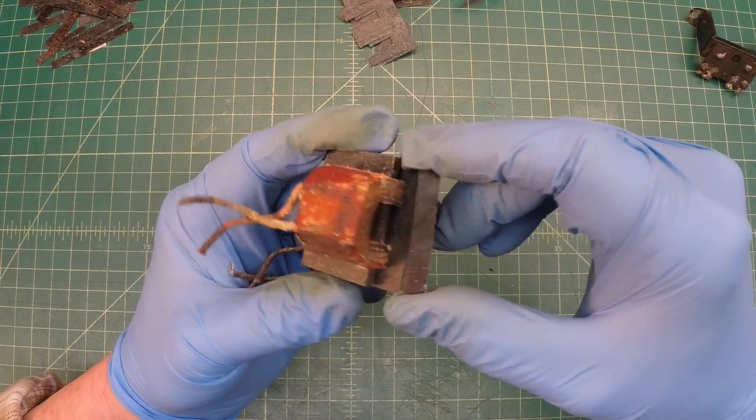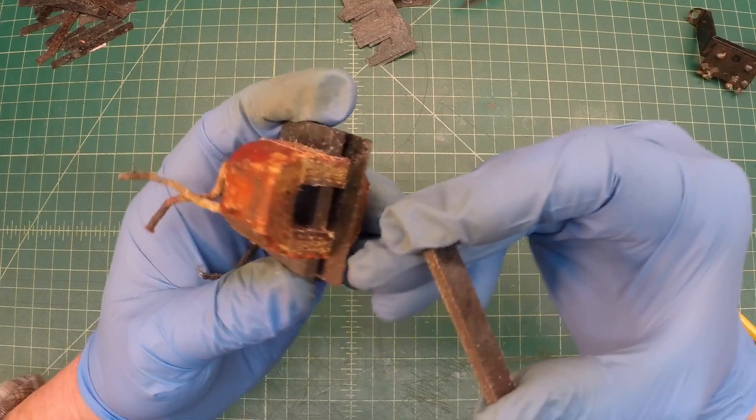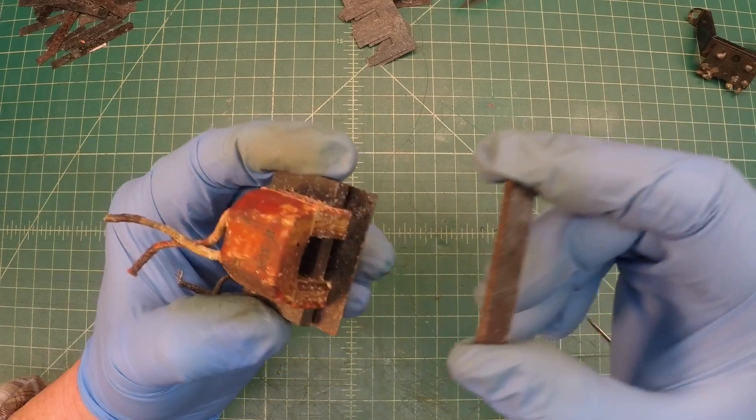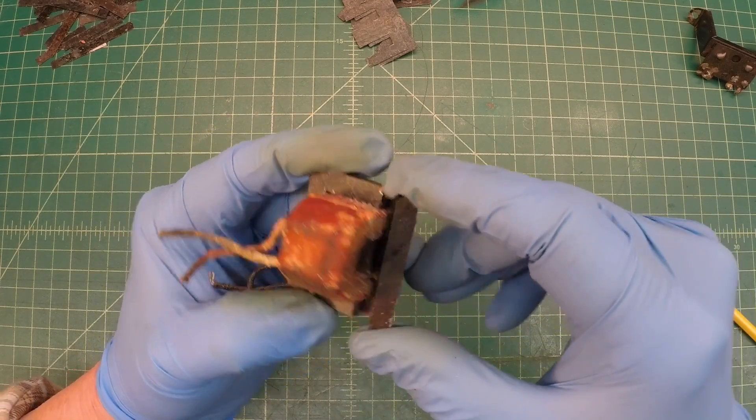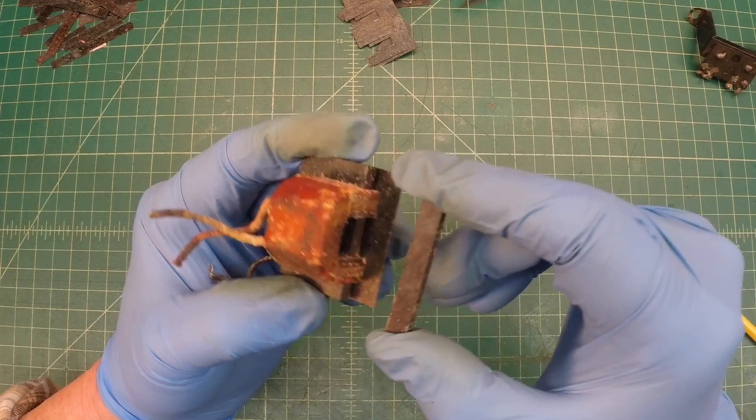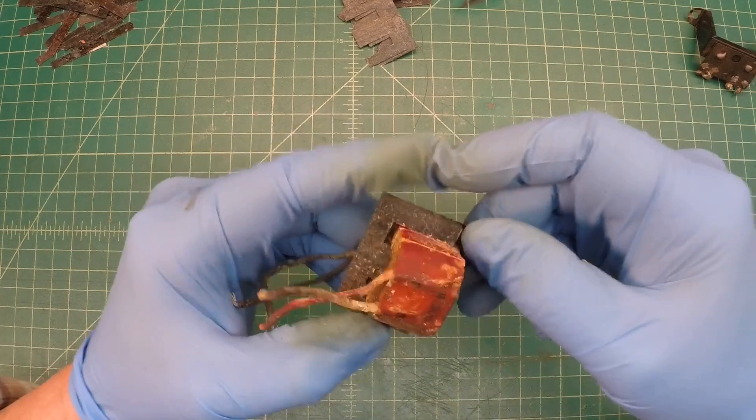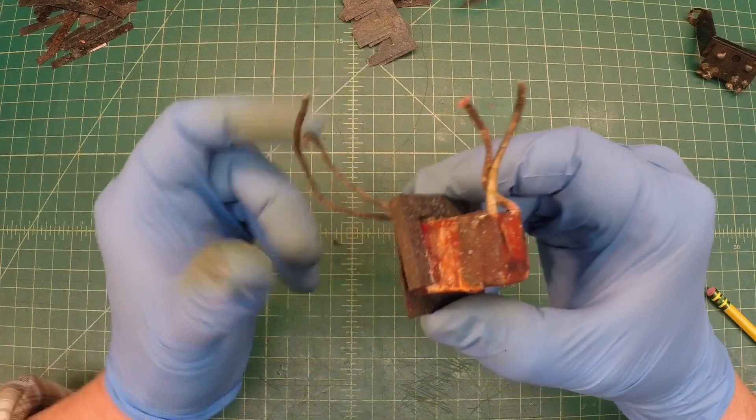All right, you can see where I'm at right now getting the laminates off. And when I got to this point in the transformer, you can see the part number here for reference so we can know which side is facing up. This is the way the pieces came apart. So these are grouped together, and same here.